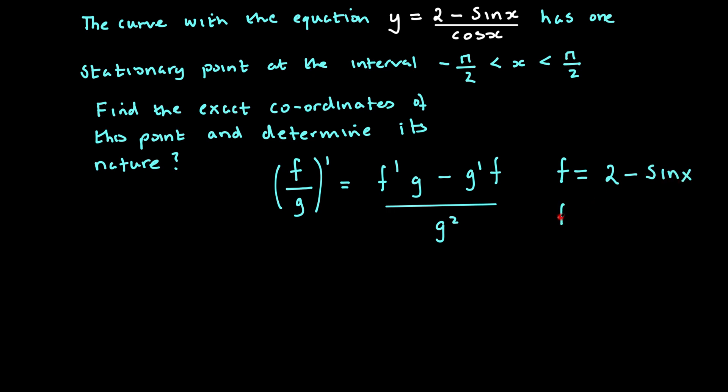So f', that's differentiating this function with respect to x, will give me -cos x. And our g, that's simply equal to cos x. And if you differentiate that with respect to x we get g' = -sin x.